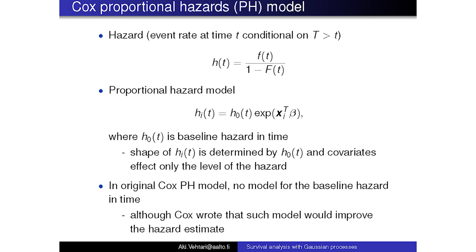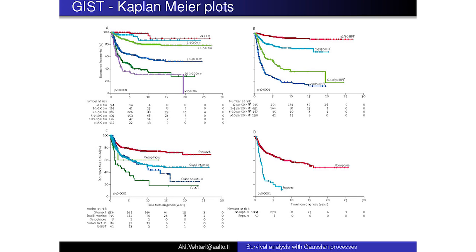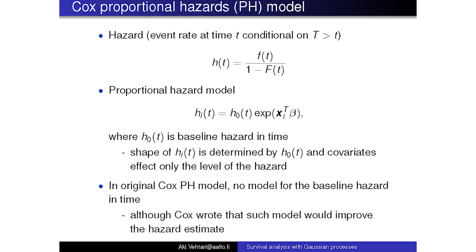These are different rule-based systems where you can see that they produce different kinds of results. One way to do survival analysis is the Cox proportional hazards model. In this proportional hazard model we assume there's some event rate which is the same for everyone on some level, but additionally we have these covariates affecting the level of the hazard. We assume the shape is the same, and we can learn the effect of several covariates simultaneously.